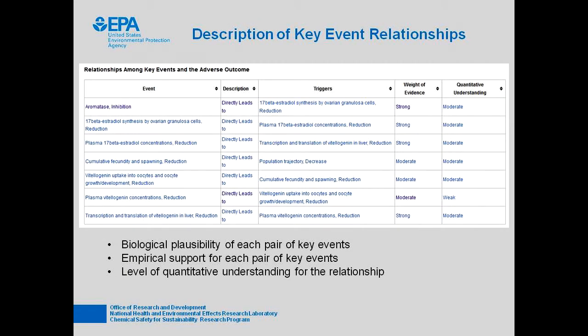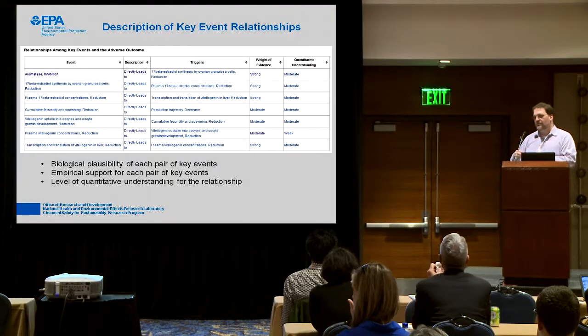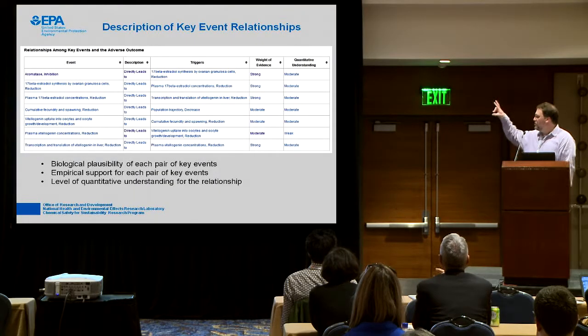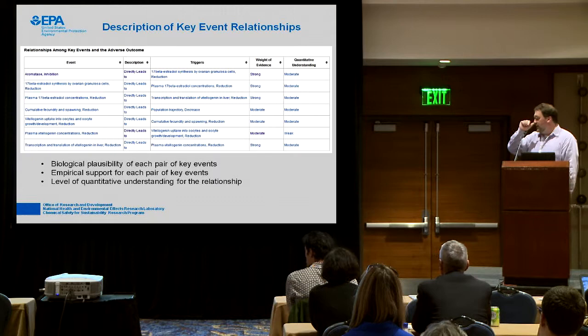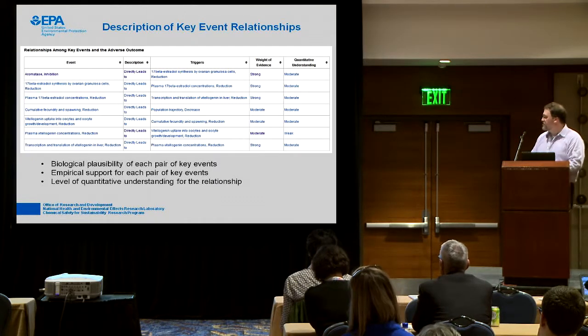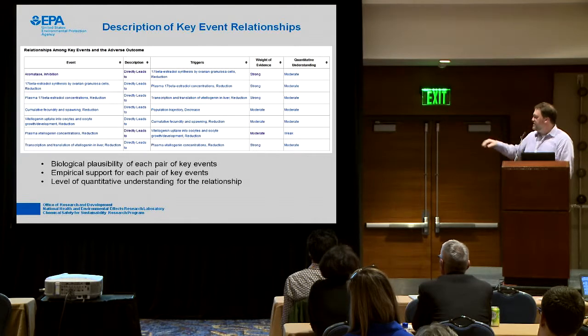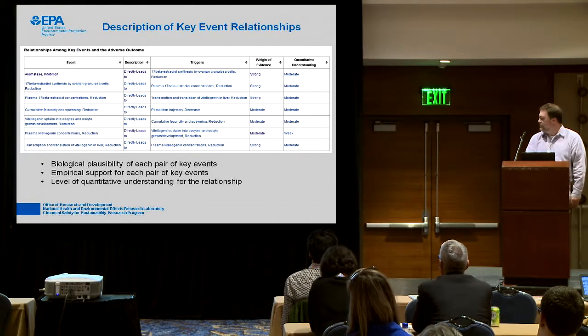The key event relationships are listed next in that summary section. Following the links to those pages, you find textual descriptions of the biological plausibility for the upstream key event leading to the downstream key event, and information about empirical support for each pair of key events. The OECD handbook provides criteria for what you then put in the weight of evidence column — strong, moderate, or weak. There's also a textual description on the key event relationship page about the quantitative understanding of the relationship, with criteria for rating based on the level of information available.